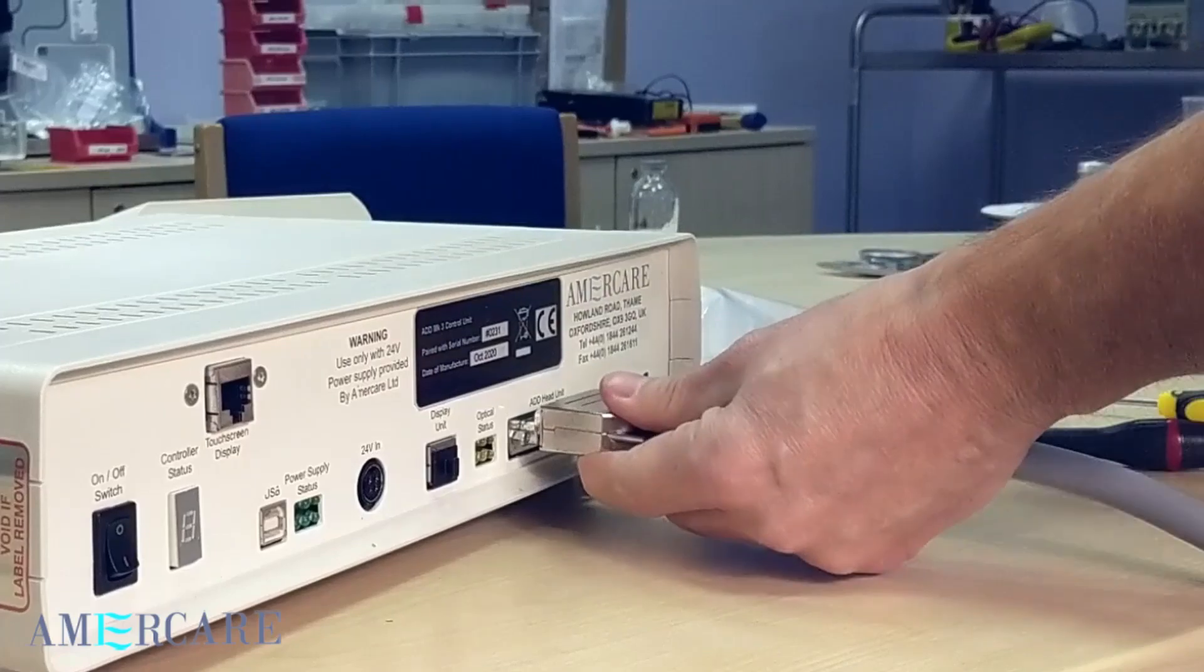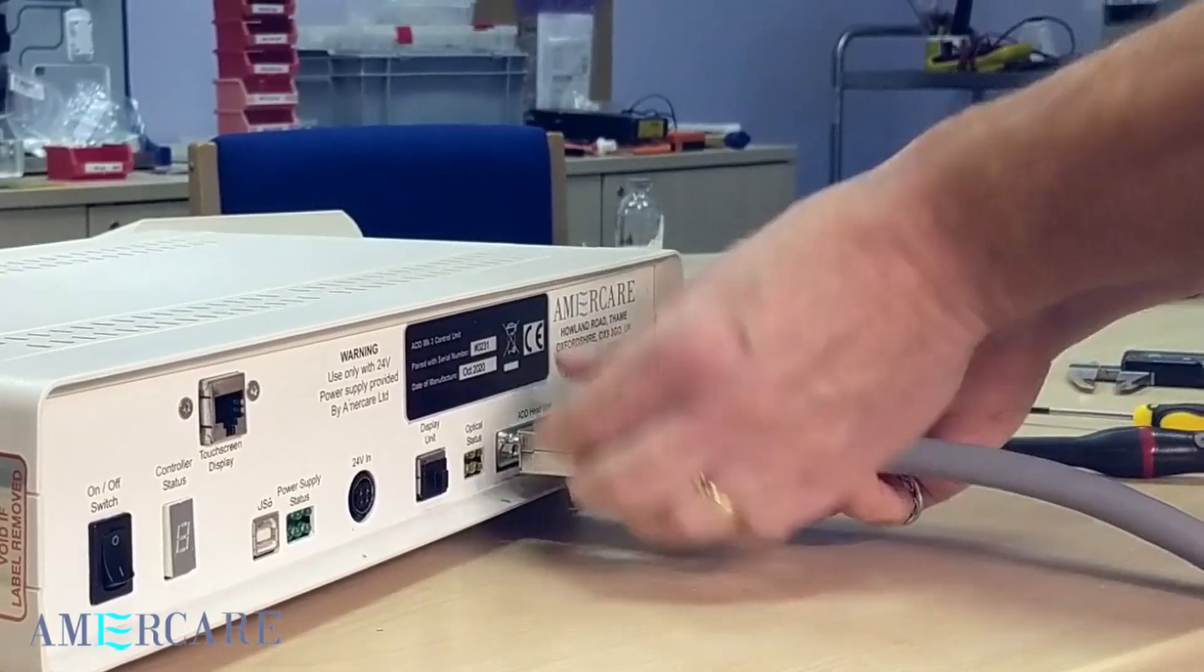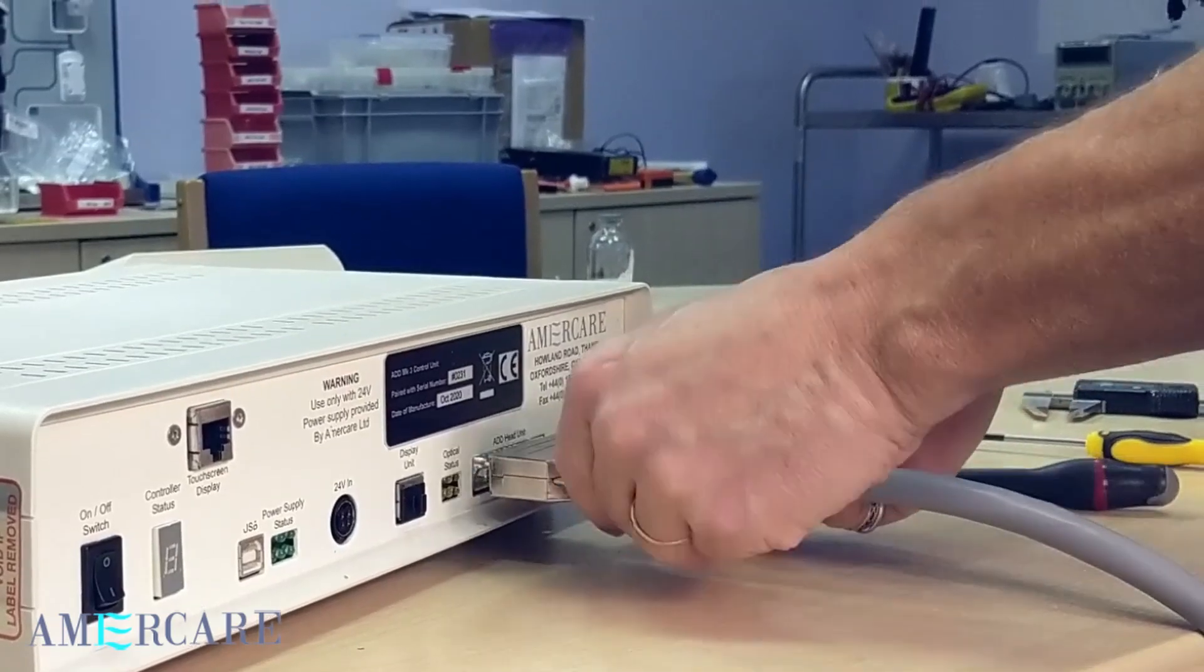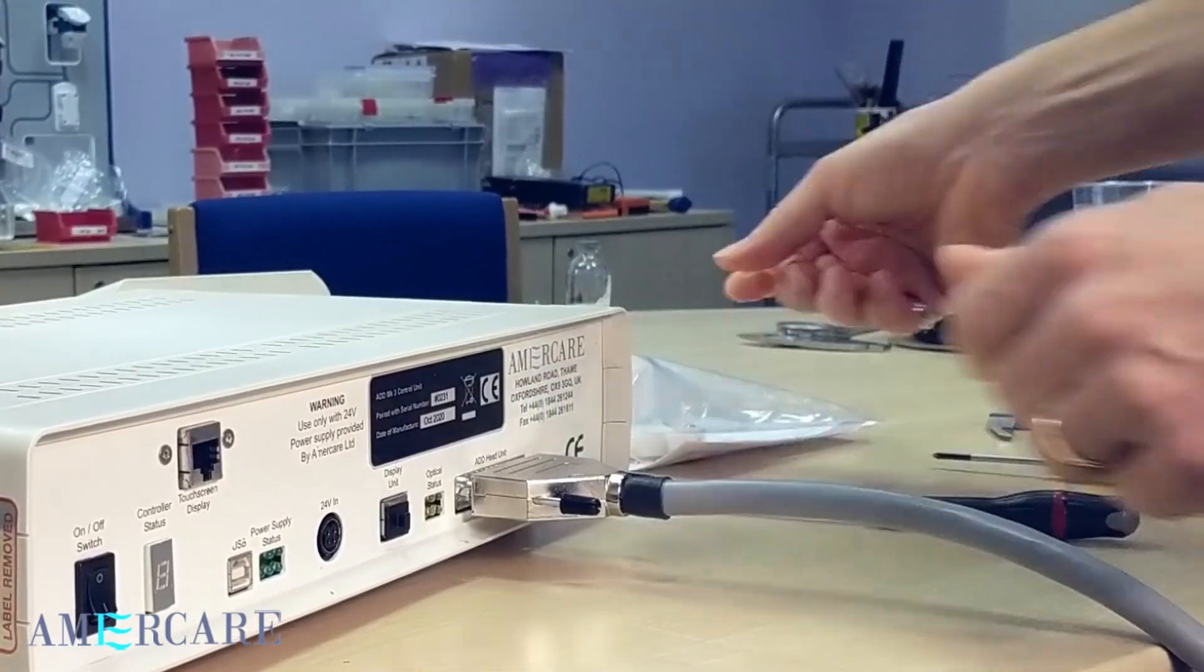To fit, correctly orientate the D connector, align and push firmly home into the socket. Tighten both securing screws to ensure a correct connection is made.